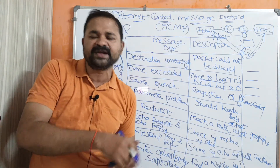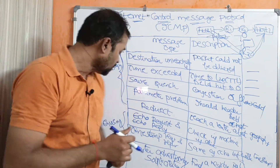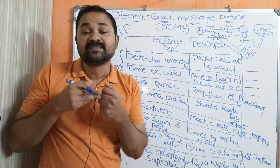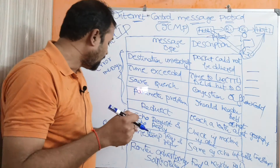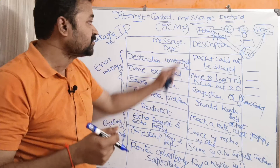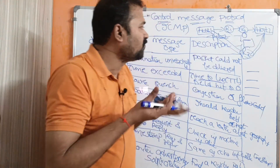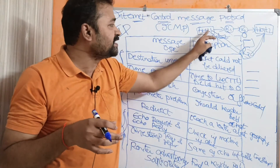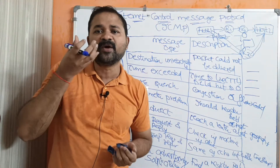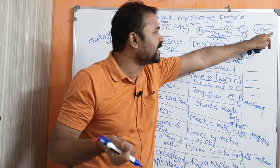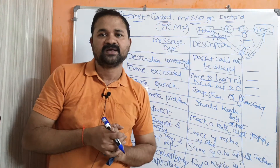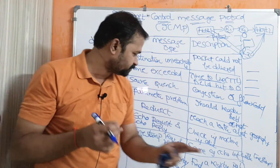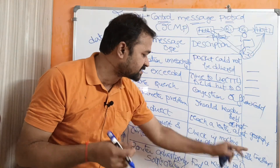The remaining three are query messages, useful for knowing the performance of the network. The first is echo request and echo reply. If host 1 wants to know whether host 2 is alive, host 1 sends an echo request to host 2. Upon receiving it, host 2 sends an echo reply back. Once host 1 reads the echo reply, it knows host 2 is alive — essentially checking if the destination is reachable.